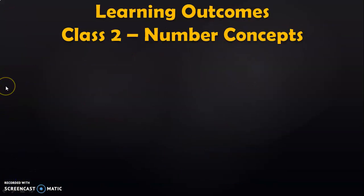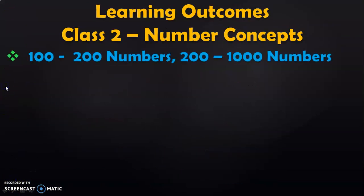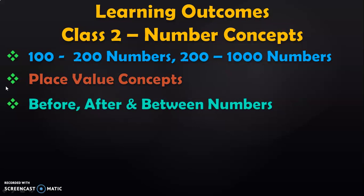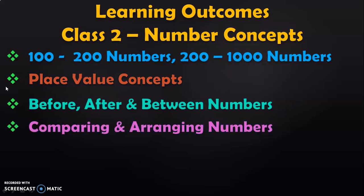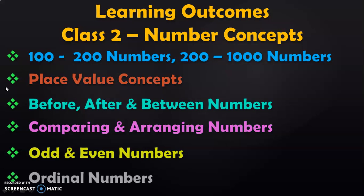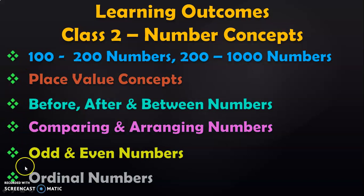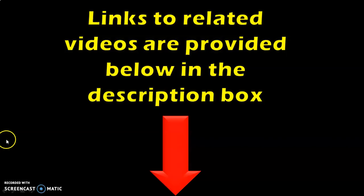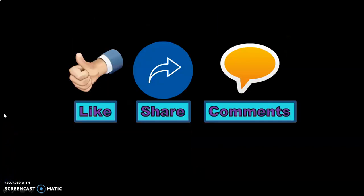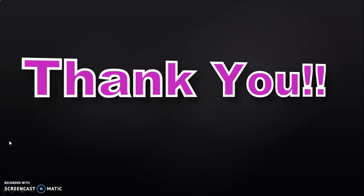The learning outcomes under class 2 in number concepts are: 100 to 200 numbers, 200 to 1000 numbers, place value concept for these numbers, before, after, and between numbers, comparing and arranging numbers, odd and even numbers, and ordinal numbers. We can frame different types of statement problems for each of these learning outcomes in class 2, as we saw examples of in this video. I have dealt with each of these learning outcomes separately in separate videos — links to related videos are given below in the description box. If you like the content, give a thumbs up, share it with your friends, and provide your valuable feedback. Thank you for watching, see you again.